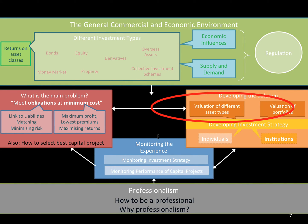This is the actuarial control cycle — I got this from a UCT slide. It's showing you where this chapter fits in the big scheme of things. Remember, CA1 is a massive subject, and it's important to remember that all the chapters are interlocking. This is an important chapter as it is part of the actuarial control cycle.